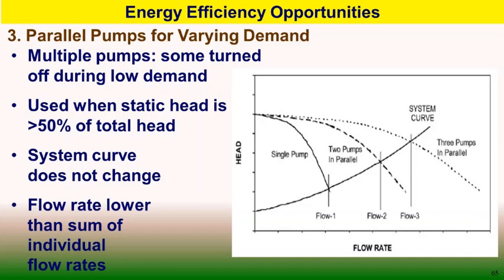Parallel operation is an improvement method for varying demand. When two or more pumps operate in parallel, the flow rate builds up without changing the head. When demand is lower, a single pump is run; when demand increases, more pumps are run in parallel. Pump curves for single, two, or three pumps in parallel add up the flow rate but the system resistance or system curve does not change, so more flow is achieved across the system while discharge head remains the same.